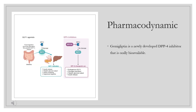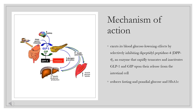Pharmacodynamics: Gemagliptin is a newly developed DPP-4 inhibitor that is orally bioavailable. Mechanism of Action: DPP-4 is a serine protease located on cell surfaces throughout the body. In plasma, the DPP-4 enzyme rapidly inactivates incretins, including GLP-1 and GIP, which are produced in the intestine depending on the blood glucose level and contribute to the physiological regulation of glucose homeostasis. Active GLP-1 and GIP increase the production and release of insulin by pancreatic beta cells. GLP-1 also reduces the secretion of glucagon by pancreatic alpha cells, thereby resulting in decreased hepatic glucose production. However, these incretins are rapidly cleaved by DPP-4 and their effects last only for a few minutes.